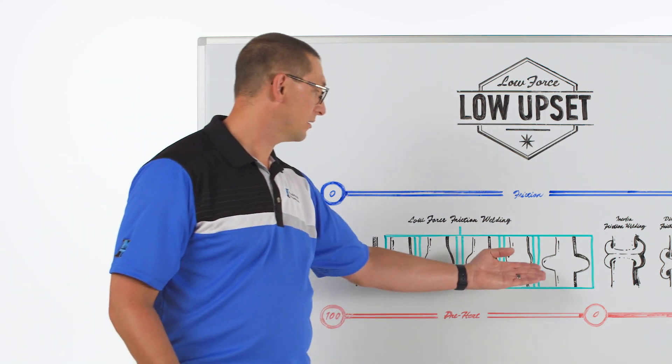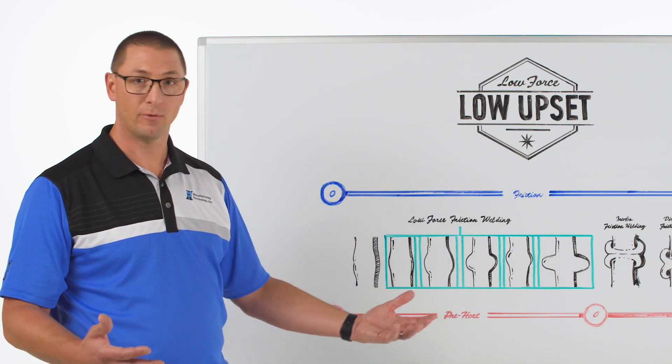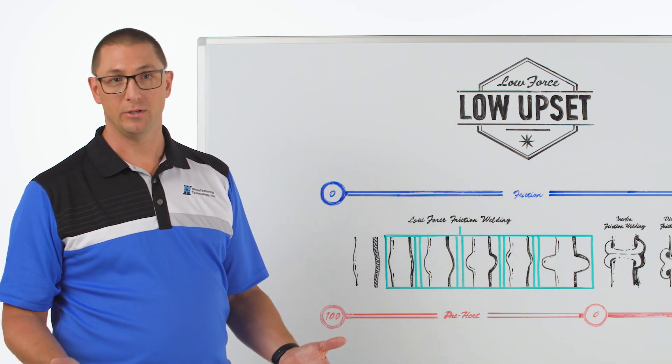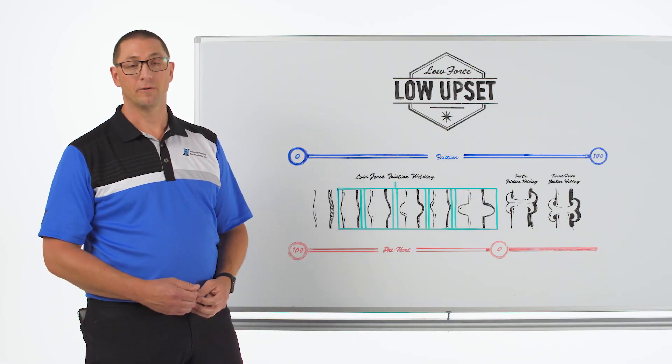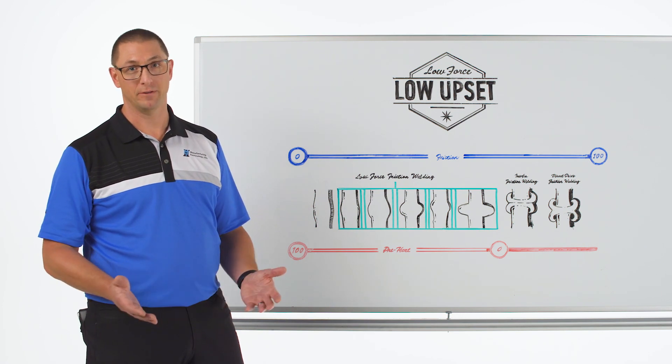But if you do want to remove the flash then we can create a geometry by manipulating the parameters of preheat, force, and relative motion in order to get one that is much easier for you to remove. This is a significant value for our customers that might remove a post-weld operation after the friction welder.